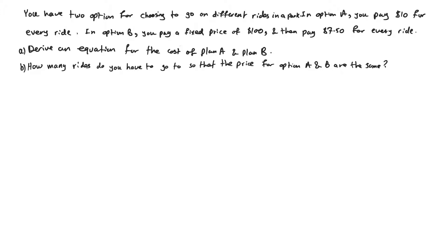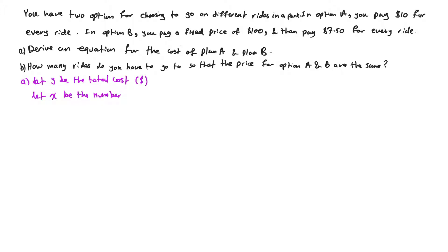To represent this using an equation, we start by identifying our variables. We let Y be the total cost in dollars, and we let X be the number of tickets.